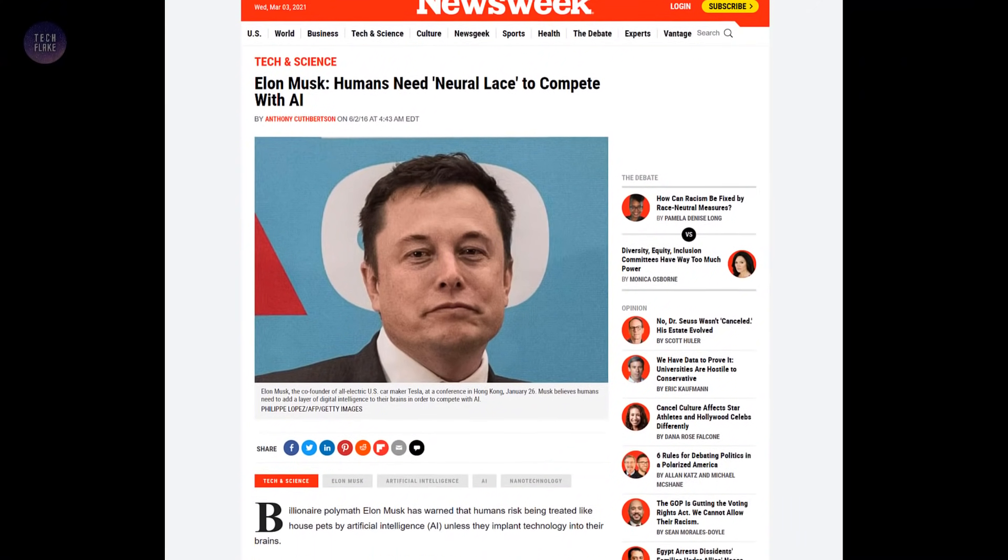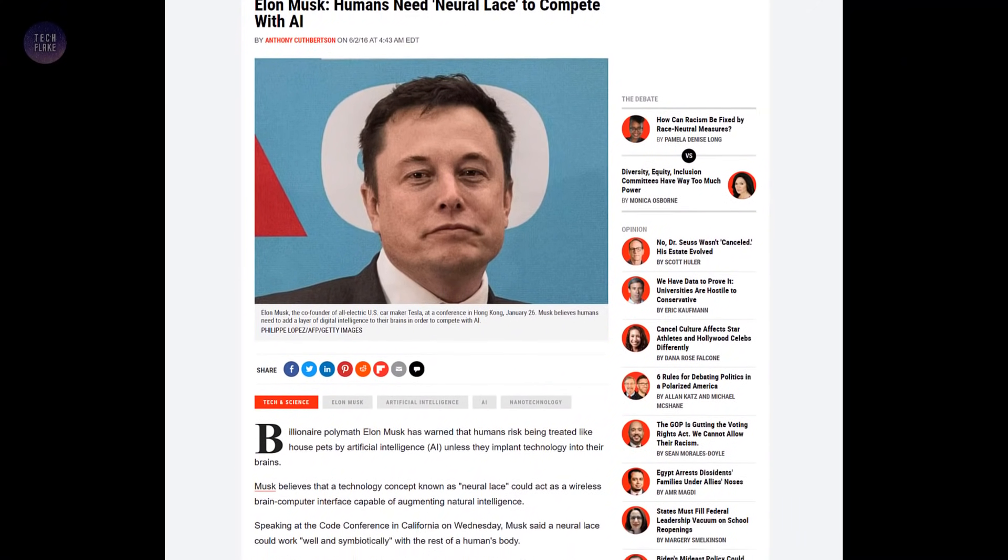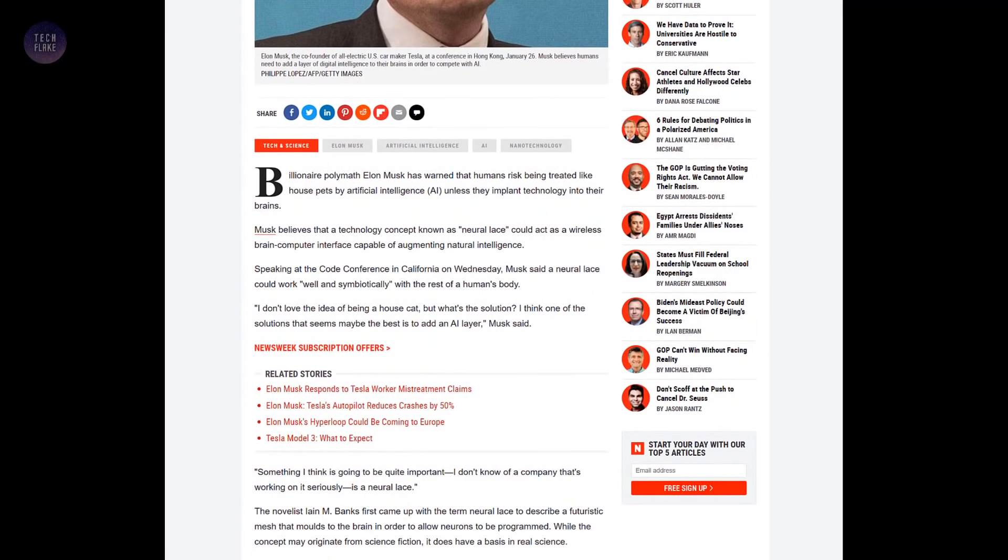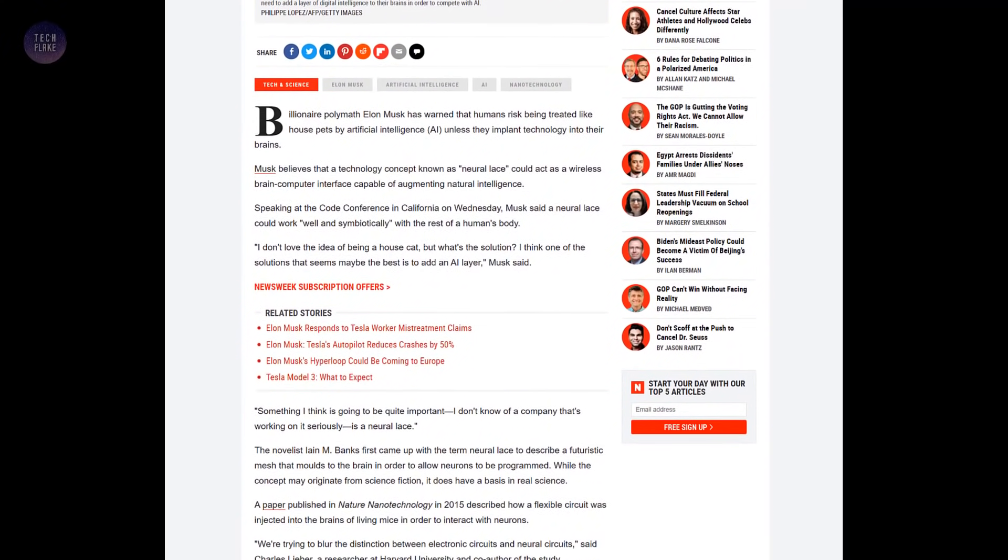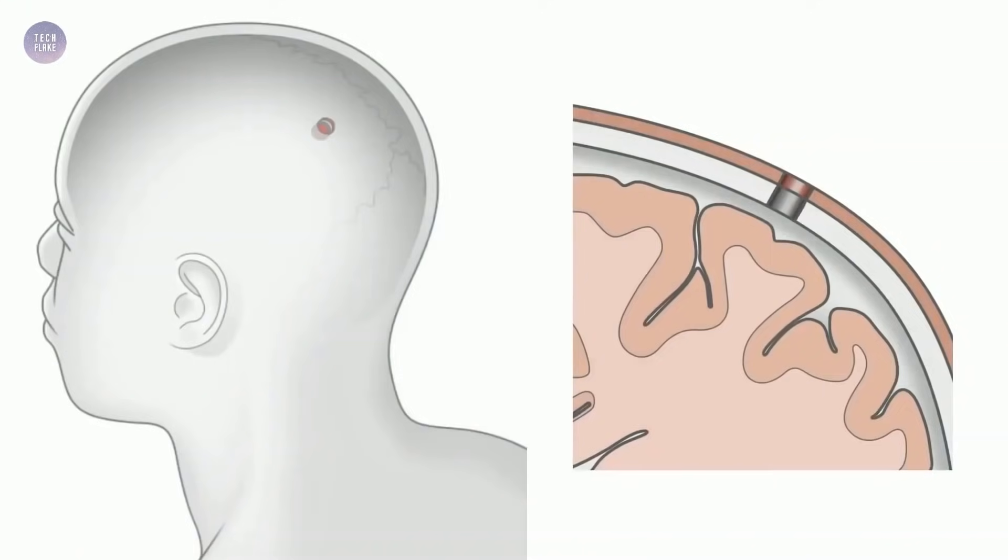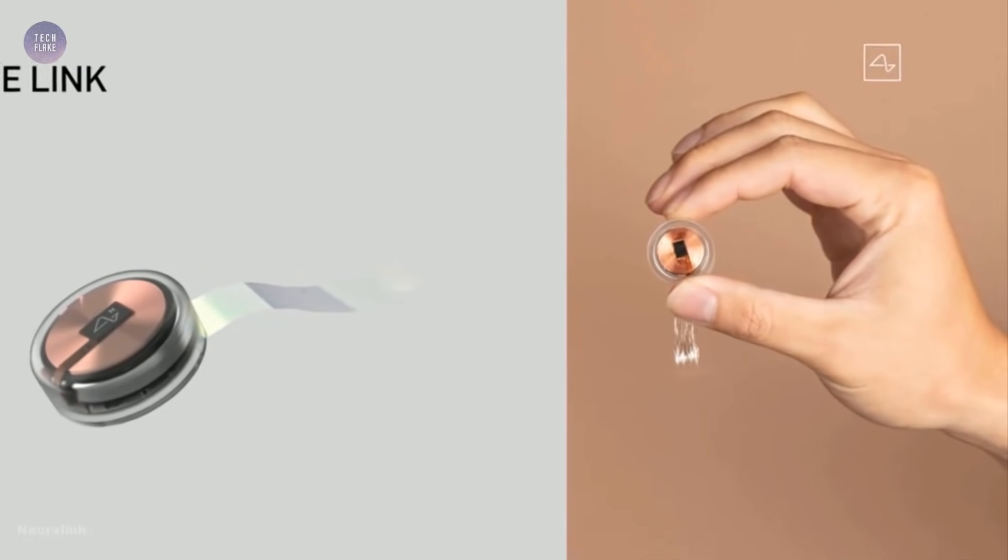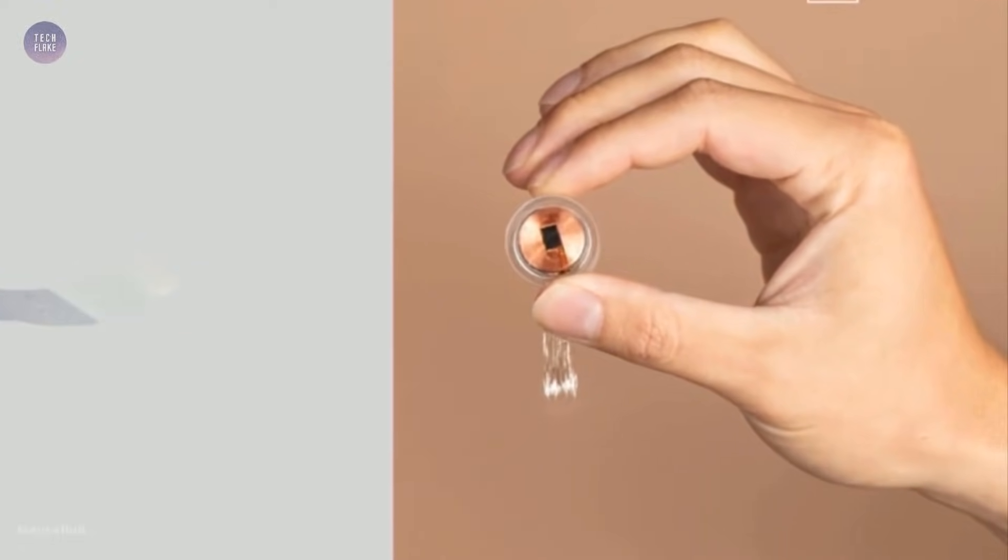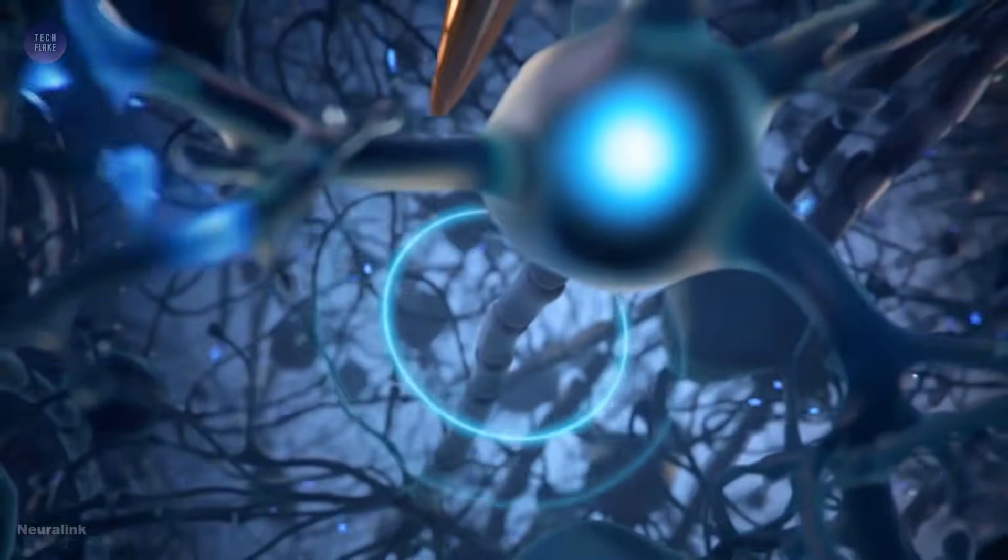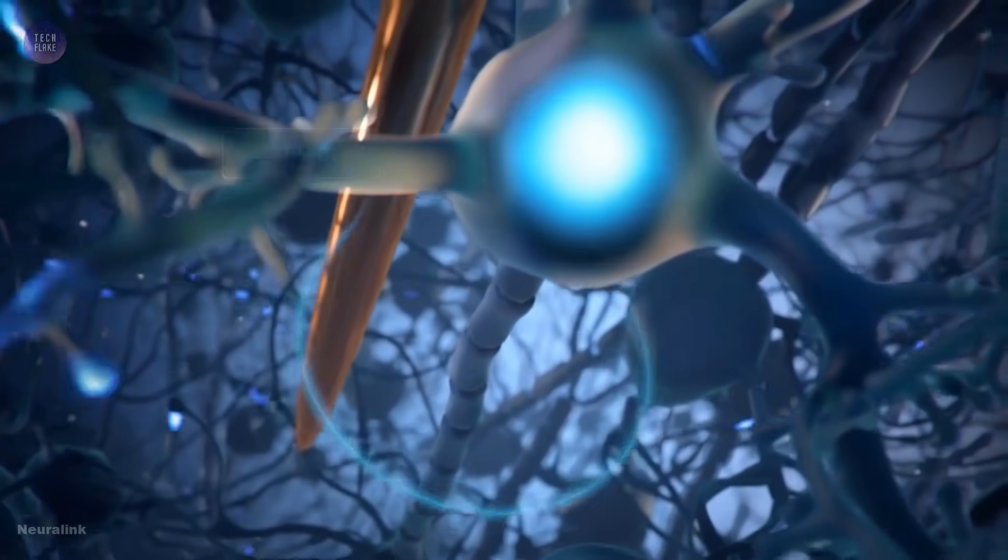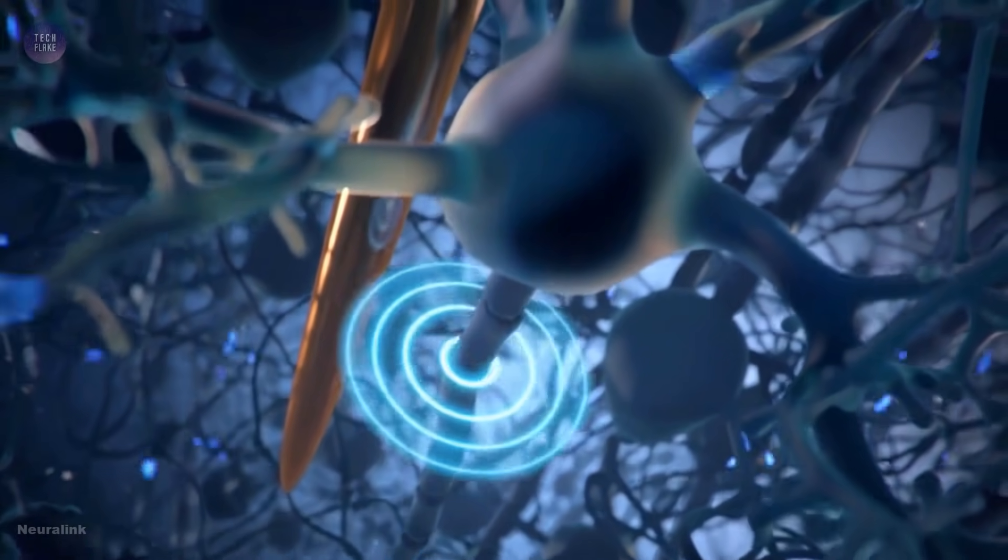In 2016, Elon Musk said that humans risk being treated like house pets by artificial intelligence unless a technology which can connect brains to computers is developed. Shortly after making the remarks, he announced Neuralink, a new brain-computer interface startup that is attempting to implant a brain chip. Neuralink will allow humans to compete with AI according to Musk, as well as help cure brain diseases, control mood and even let people listen to music directly from our chips. We will come back to this later.